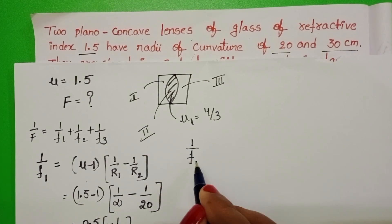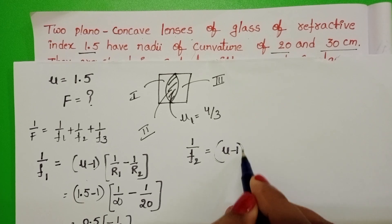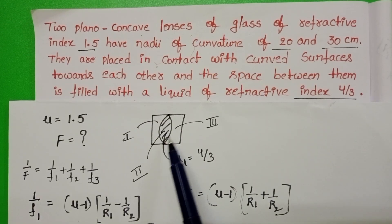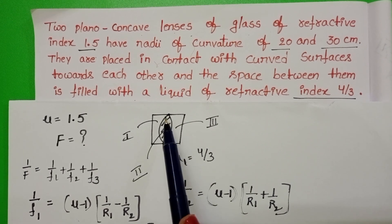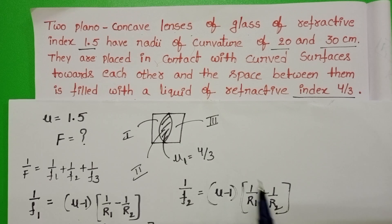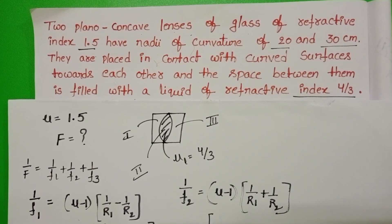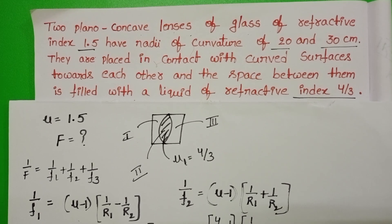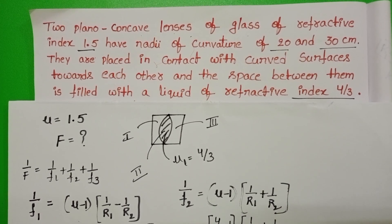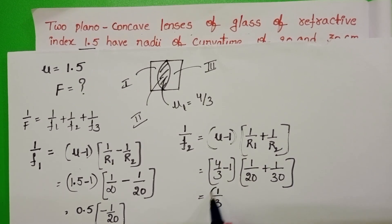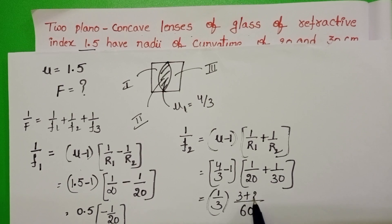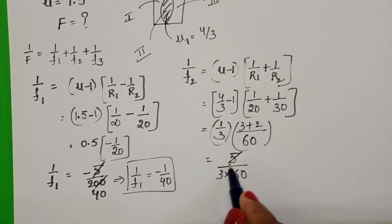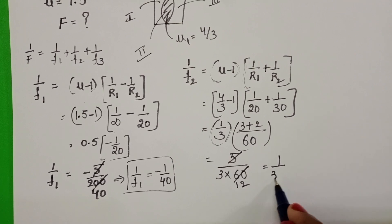For the second lens — the double convex liquid lens — 1/F2 = (μ - 1)(1/R1 + 1/R2). The center of curvature of the first curved surface is on the positive side, giving +1/R1. The center of curvature of the second curved surface is on the negative side, so minus of minus becomes plus. The refractive index of the liquid is 4/3, so (4/3 - 1) = 1/3. The radii are 20 and 30 cm, giving LCM of 60, and 1/F2 = 1/36.